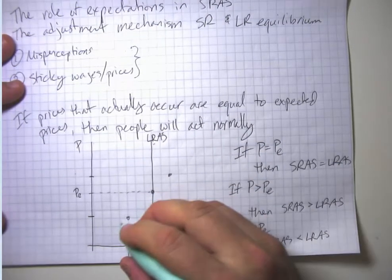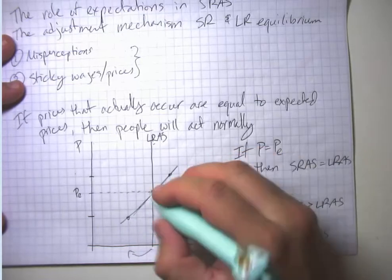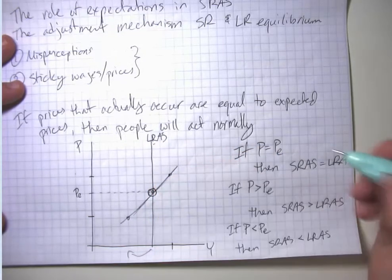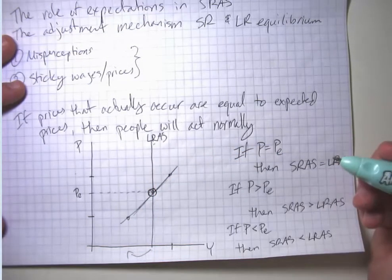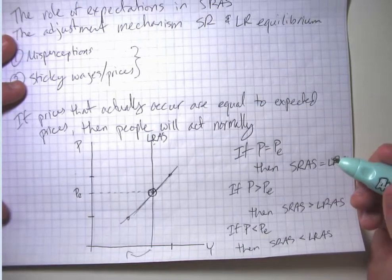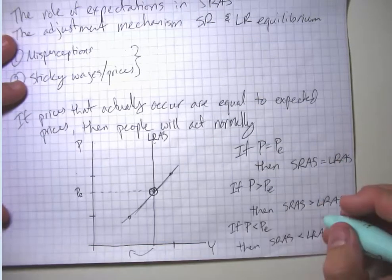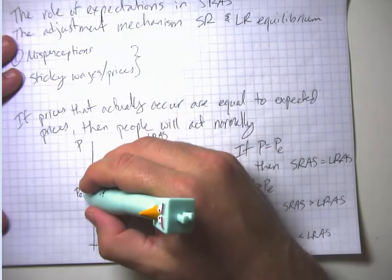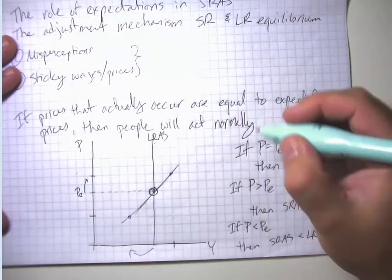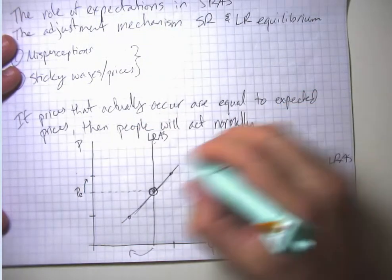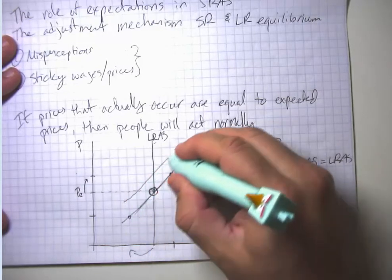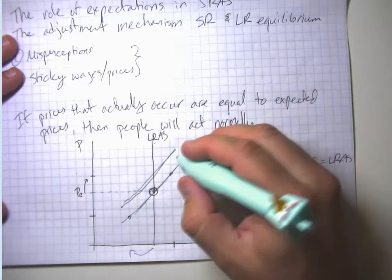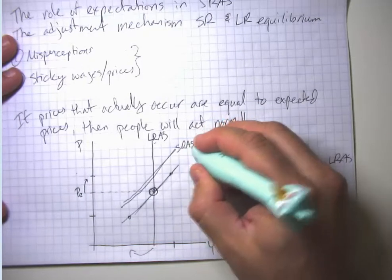So we think the aggregate supply curve looks like this. It intersects the long-run aggregate supply curve at the expected price level. Therefore, if people's expectations change, that in itself can shift the short-run aggregate supply curve.